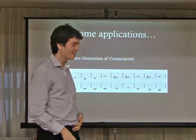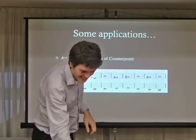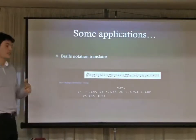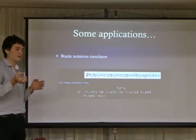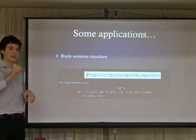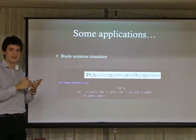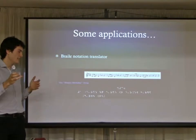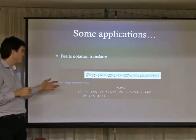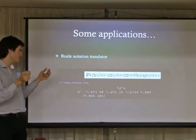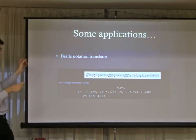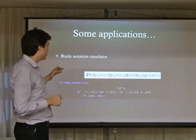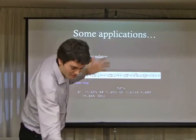Another example: why not create a Braille music translator? You have a song that you want to convert into Braille. You get the song, analyze the data, extract the notes, sharps, flats, and rhythm, and then using some definitions you map those to Braille characters. These two applications are already in the Music21 library.